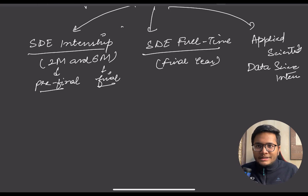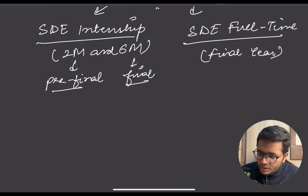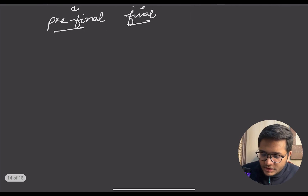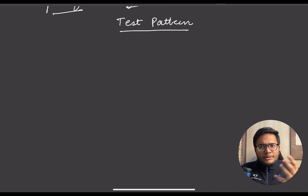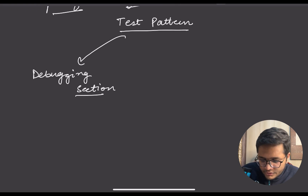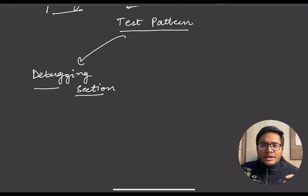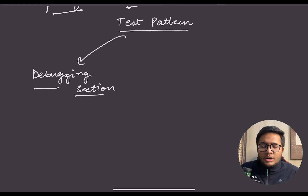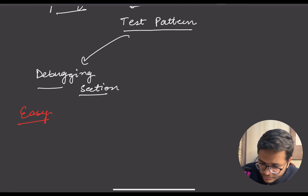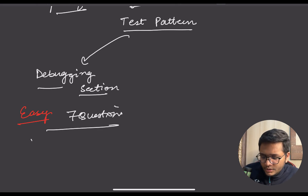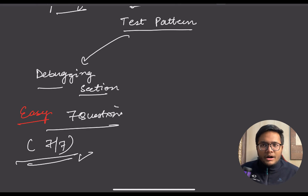For SDE internship and SDE full-time, Amazon has an online challenge. Once you apply on the careers portal — either through a referral or without — there are very high chances you receive a test link. The first section of this test is a debugging section where you get around seven questions. There can be syntax errors or logic errors, and you need to debug them. I would rate this section as very easy — if your fundamentals are clear, you can clear all seven very easily.